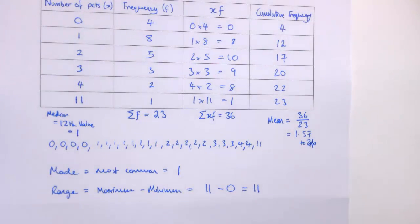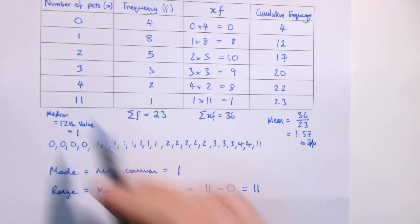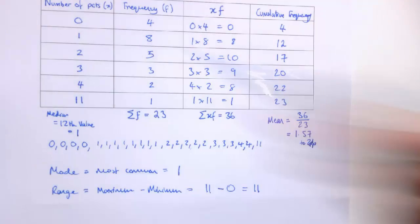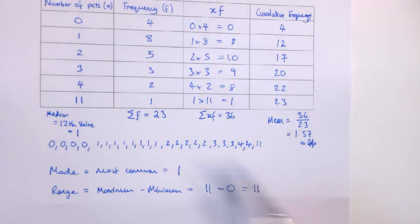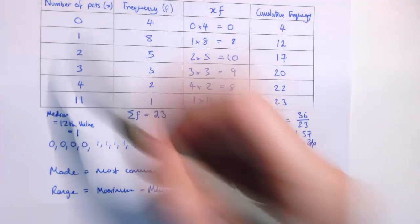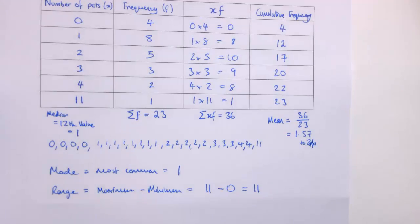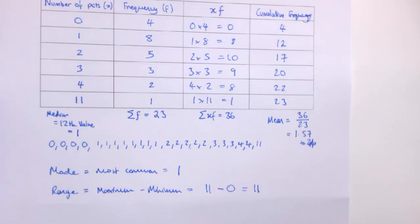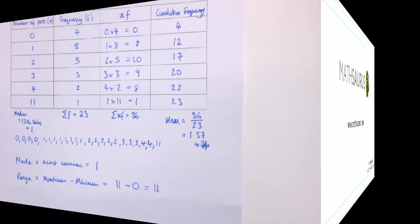The ideas for mean, median, mode and range are no different than when we just had a list of data. A frequency table really is just an abbreviated list of data. Think through what you are doing, follow those rules, and you will get the right answers.